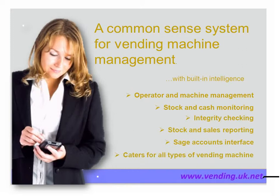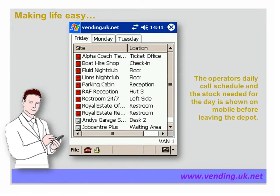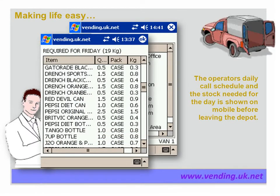Let's first look at the operator's mobile handheld device. The operator's mobile device shows a list of vending machines needing a visit for each day. Visits are scheduled on the vending.UK.net system and can also be triggered when the system estimates that stock in a machine is running low. Stock needed for the van at the start of the day is shown on the operator's mobile, by looking at today's visits and calculating the estimated sales for each product from each machine.